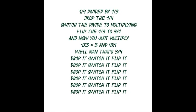1 over 4 divided by 1 over 3: you drop the 1 over 4, switch divide to multiply, and flip the 1 over 3. So it is 1 over 3 becomes 3 over 1. Now you just multiply: 1 times 3 equals 3, and 4 times 1 — that's 3 over 4.